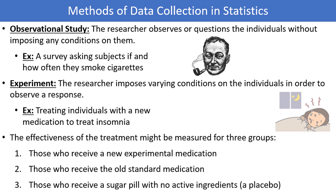After some period of time, each individual would be measured to determine how much their condition has improved. In a study like this, we may have to resort to simply asking the patients how much their sleep has improved, but ideally we would be able to measure the improvement in some objective way to determine if the treatment — in this case the experimental medication — really is effective.